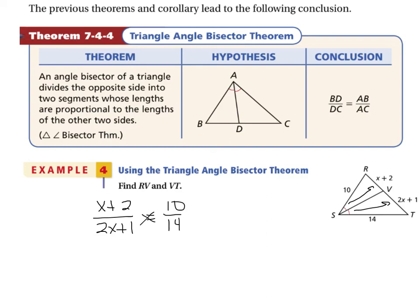We then cross multiply. That would give me 14 distributed into X plus 2, which is 14X plus 28 equals 20X plus 10. I now solve. If you solve this, you would get 6X equals 18, and X equals 3.